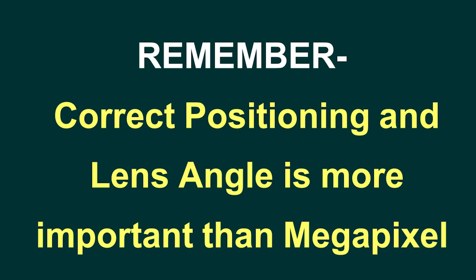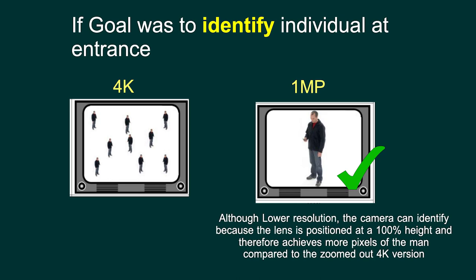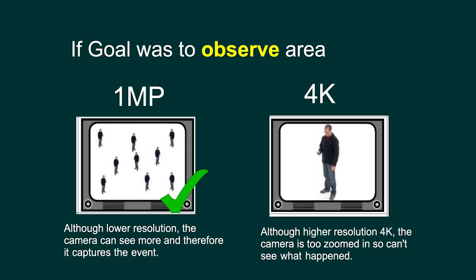Let's say the goal was to identify an individual at your front door. Having a 4K camera in a completely observational mode where the proportion of the person's height is about 10% in relation to the monitor — that's not going to be as good as having a one-megapixel camera which is able to clearly capture the identity. Although it's a lower resolution, because it's filling a larger proportion it will generally have more pixels across the overall height of the monitor compared to the smaller 4K version.